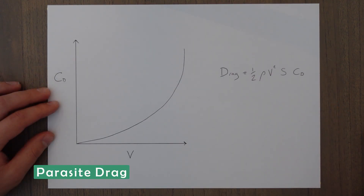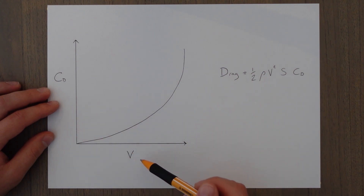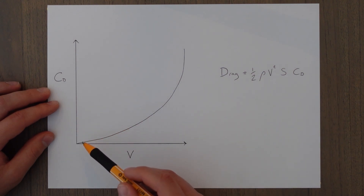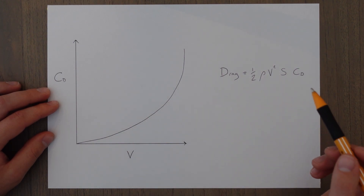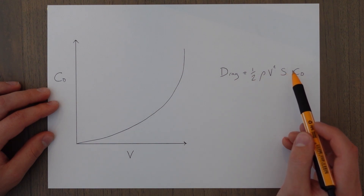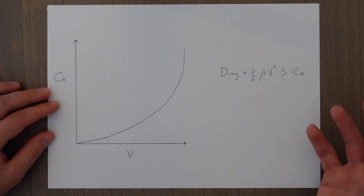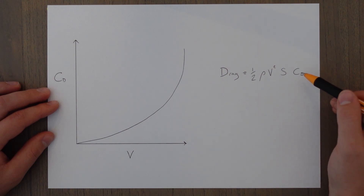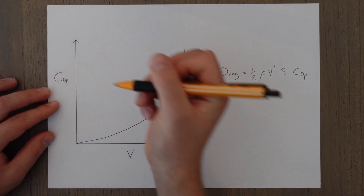Now we know all the parts that make up parasite drag, let's apply the concept to an actual aircraft. If we look at a graph of parasite drag against speed, we can see that it increases and actually varies according to speed squared. This is because the drag of an aircraft is given as half rho V squared times S times CD. When we're only looking at the parasite drag, we use the coefficient of drag parasitic, so CDP.